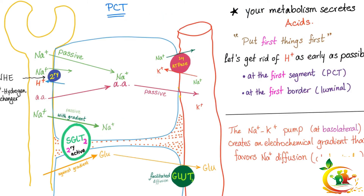How does the proximal tubule handle acid? Your metabolism constantly secretes acids, so the kidney puts first things first: get rid of acid as early as possible — at the first segment, the proximal convoluted tubule, and at the first border, the luminal border. There's no waiting until the distal convoluted tubule. We get rid of acid thanks to sodium via secondary active transport — we consume energy only once. This is called the sodium-hydrogen exchanger.